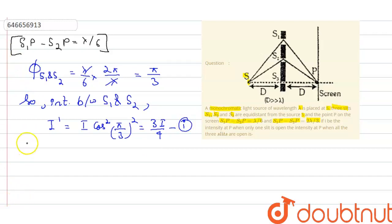The second equation which is given to us is S1P minus S3P equals 2 lambda by 3, and out of this we can find the phase difference between S1 and S3, which equals 2 lambda by 3 into 2π by lambda, and this comes out to be 4π by 3.